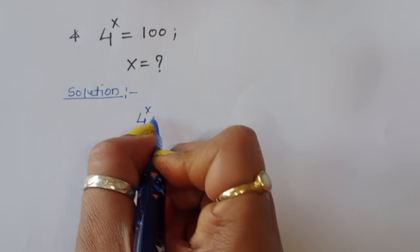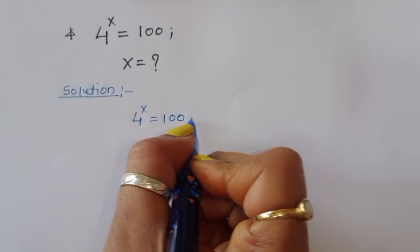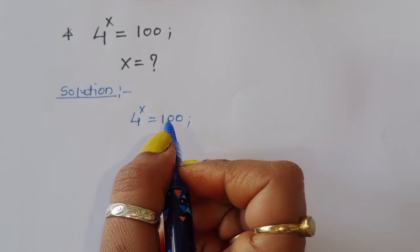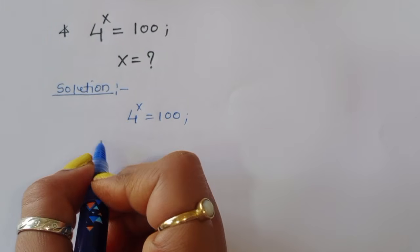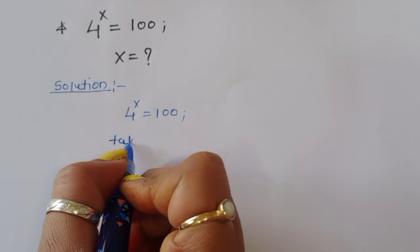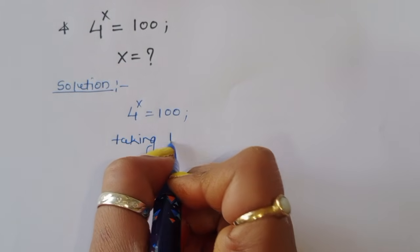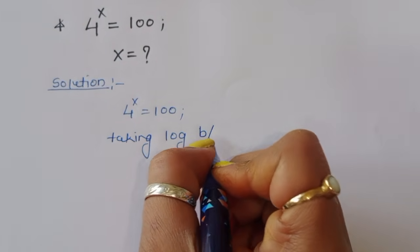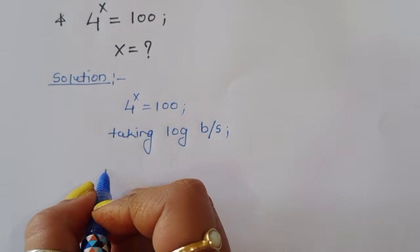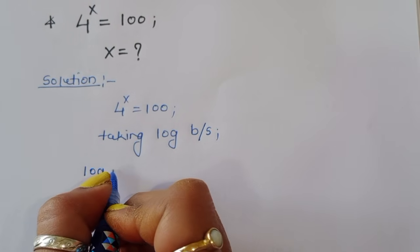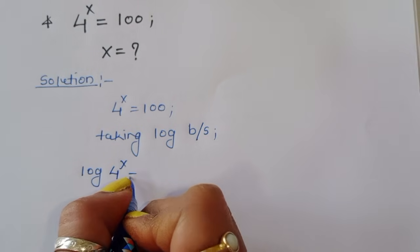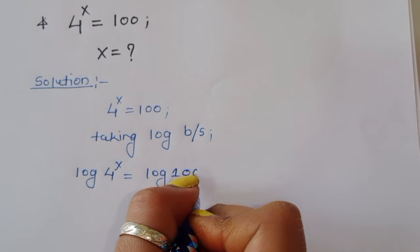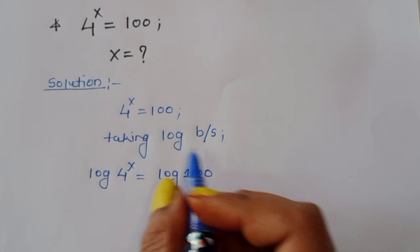4 power x is equal to 100 — this is the given question. We can take log on both sides, so taking log both sides, we will get: log of 4 power x is equal to log of 100.